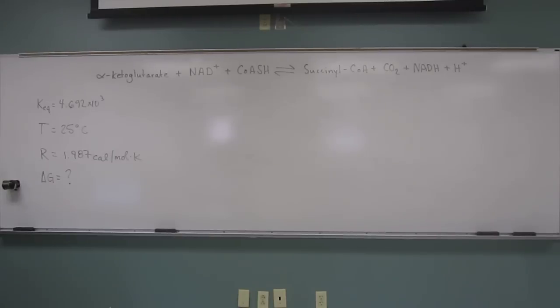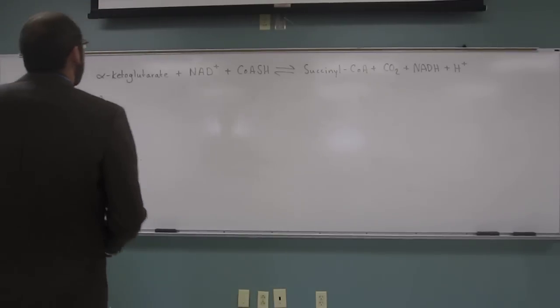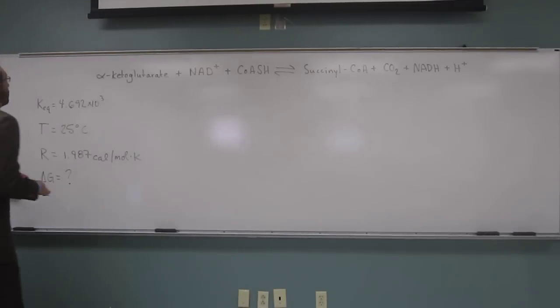If the KEQ for this reaction is 4.692 times 10 to the third, calculate the delta G for this reaction and decide whether this reaction will be favorable or unfavorable at these conditions and which side of the equilibrium will the reaction lie on. Okay, so the first thing we want to do in this problem is what?